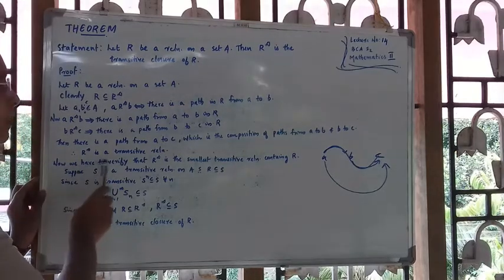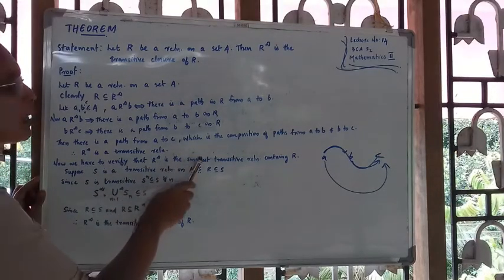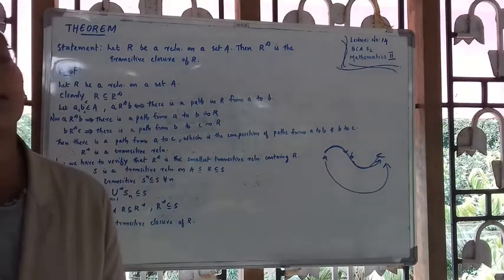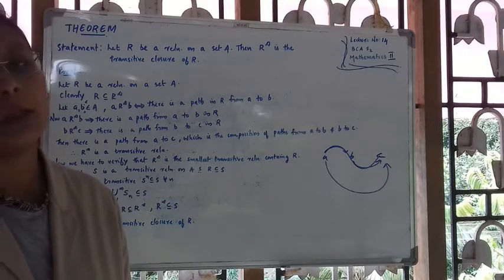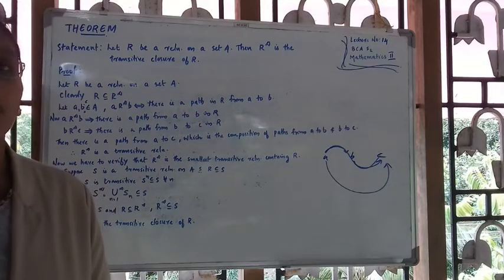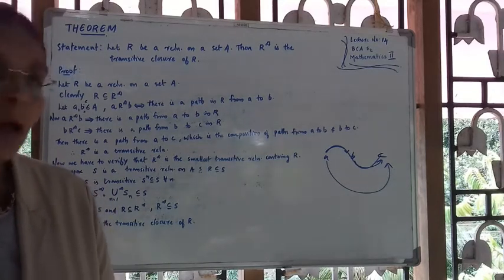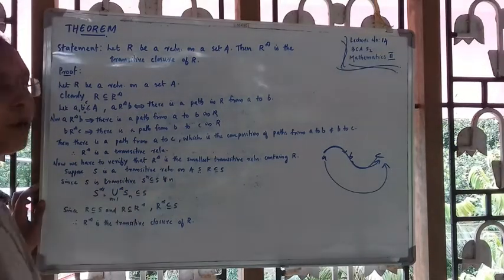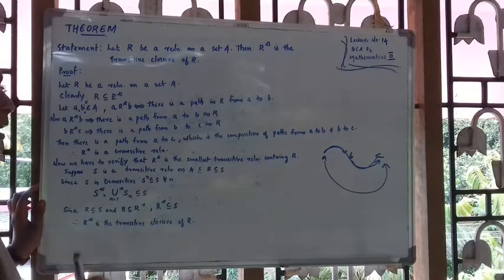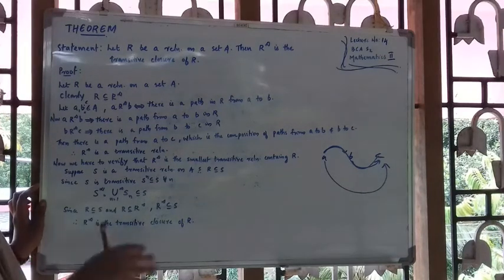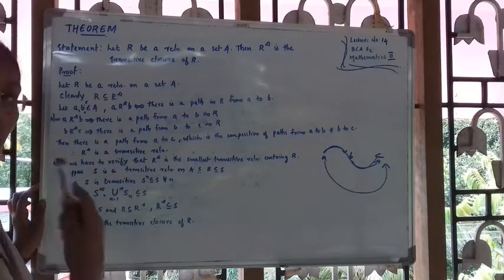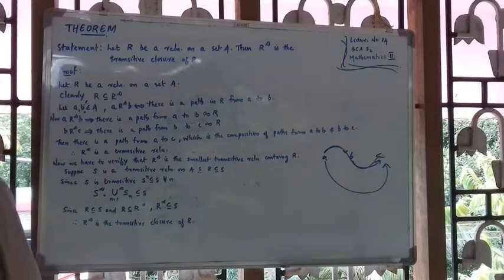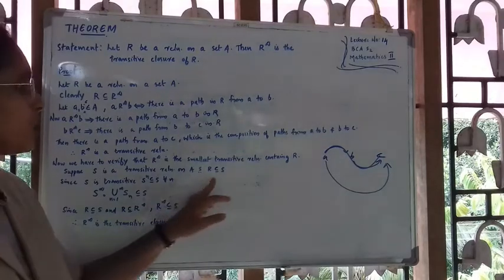Now we have to verify that R-Infinity is the smallest transitive relation containing R. Since R-Infinity is a transitive relation, we next show it is the smallest. Suppose S is any transitive relation on A such that R is a subset of S — that is, R is contained in S. S is one of the transitive relations containing R.